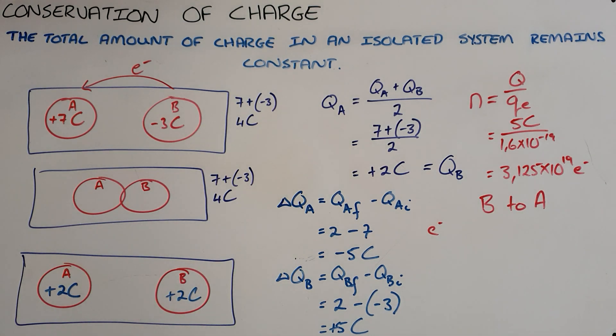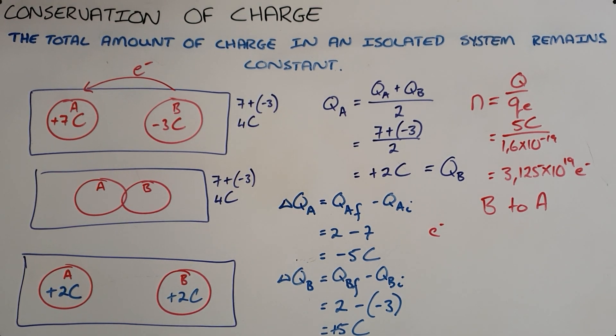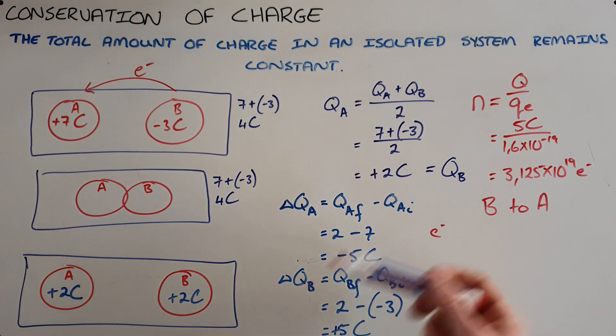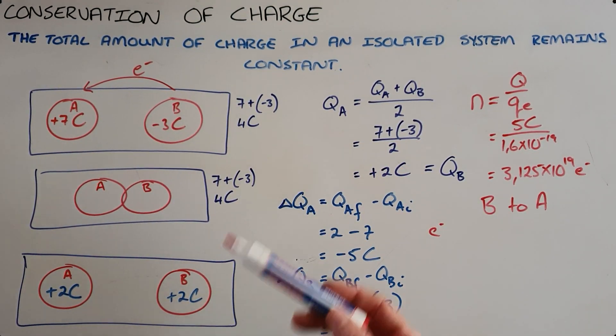Electrons are always transferred from the more negative to the less negative object. And as we can see, the total amount of charge in this system has remained the same.